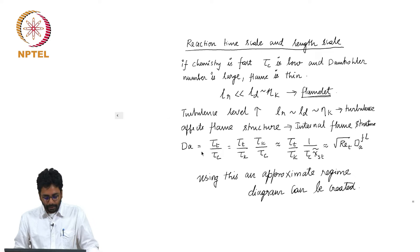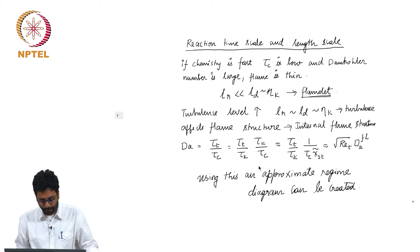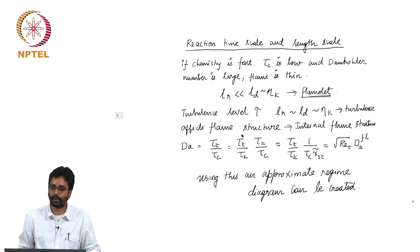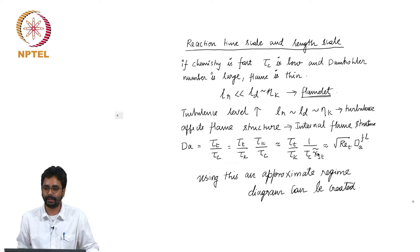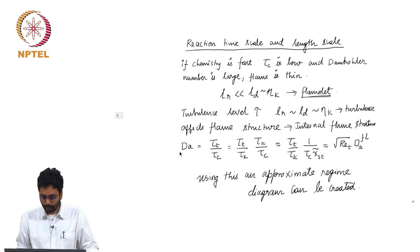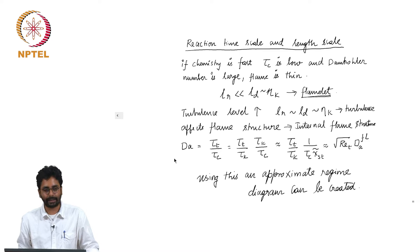The Damköhler number can be defined as the ratio of the integral time scale to the reaction time scale, which can be split into two factors: the ratio of the integral time scale to the Kolmogorov time scale, multiplied by the Kolmogorov time scale to the reaction time scale. The mixing time scale is the inverse of the scalar dissipation rate. Using the scaling relations derived, the overall Damköhler number equals the square root of the Reynolds number multiplied by the flame Damköhler number.